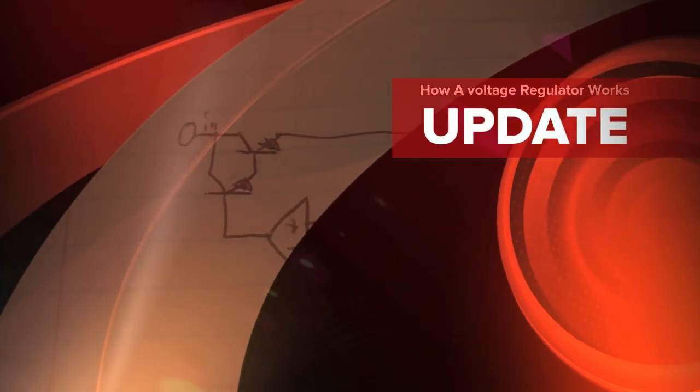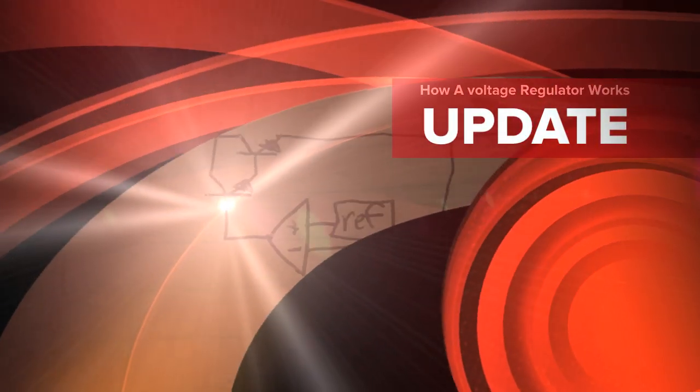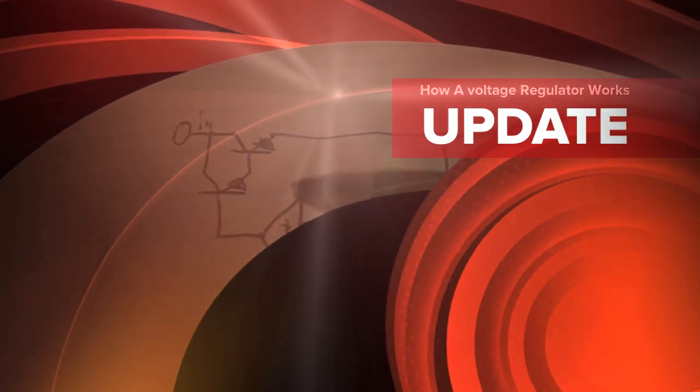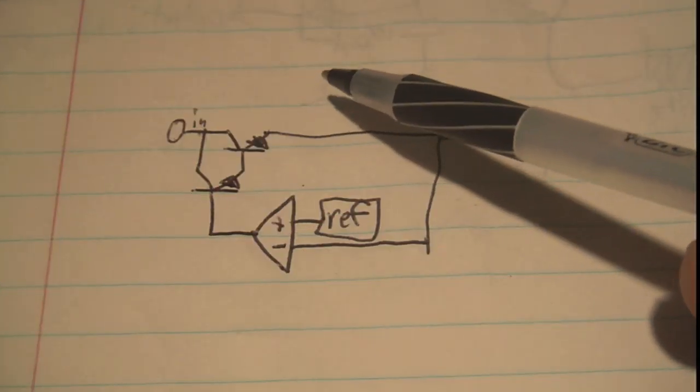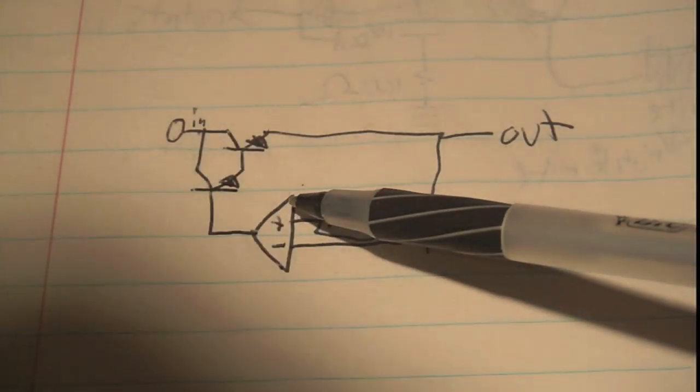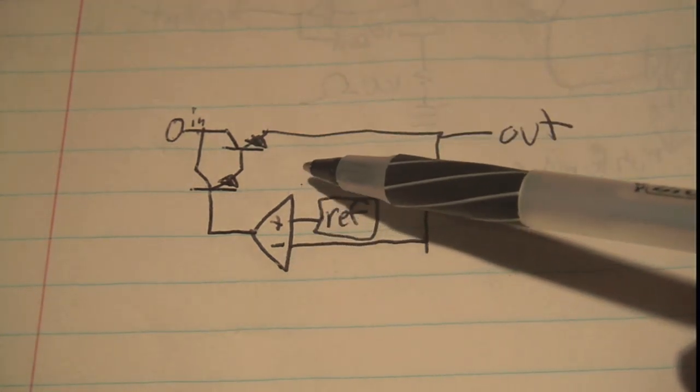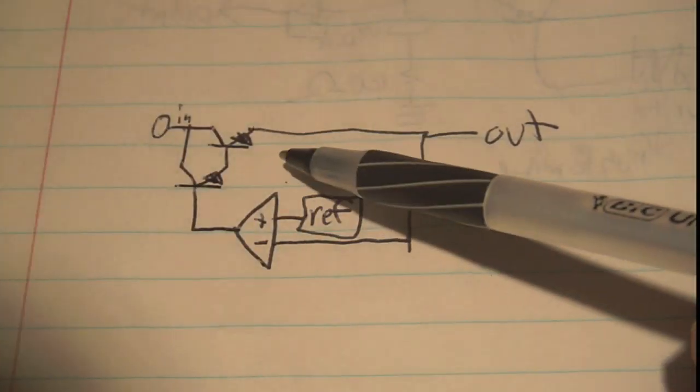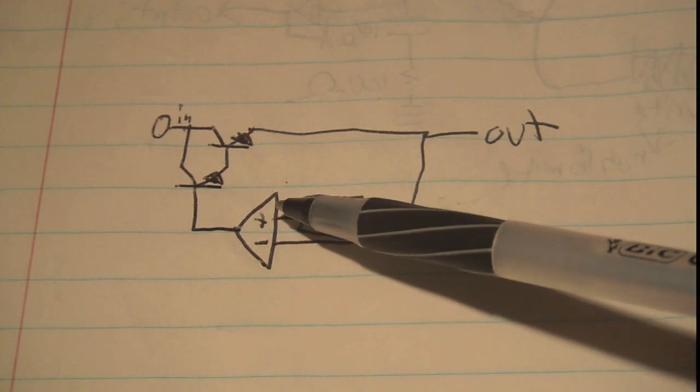Hey guys, I'm back. So today I'm going to be explaining the inner workings of a voltage regulator. This would be the inner workings of like a 7812 or a 7805 or LM317, like any of those common 12, 5 volt, 3.3 volt regulators.